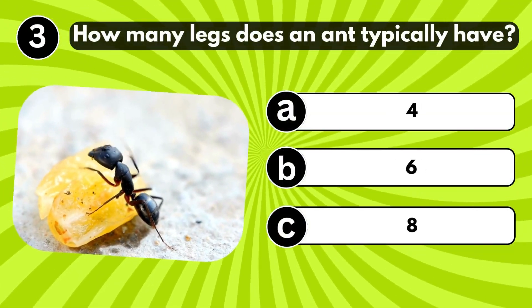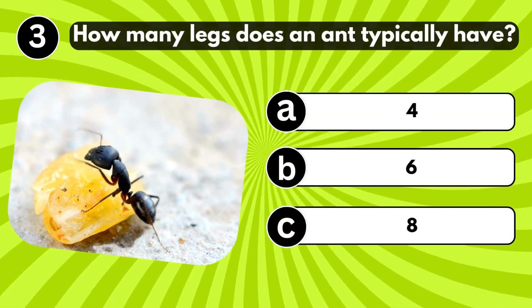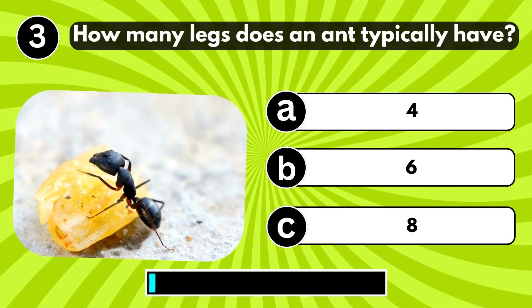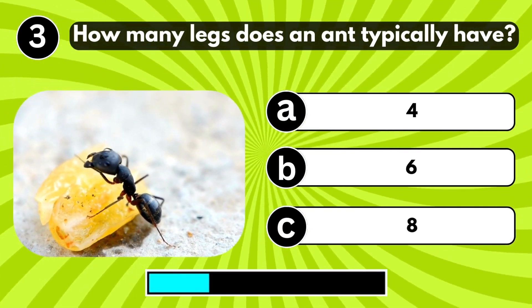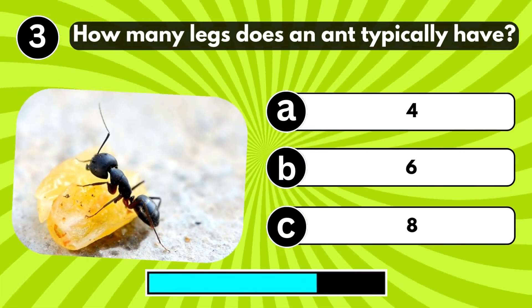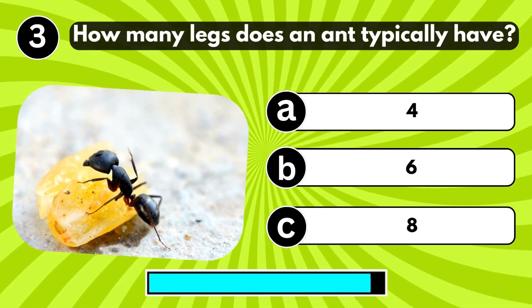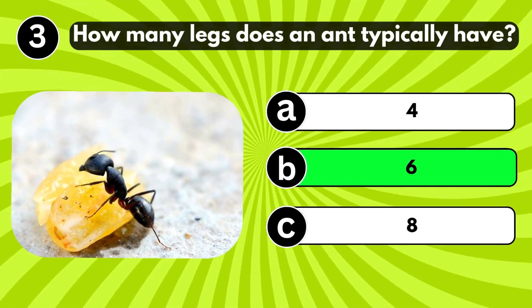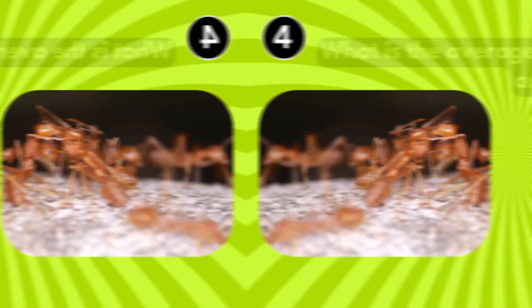How many legs does an ant typically have? 6 Legs.